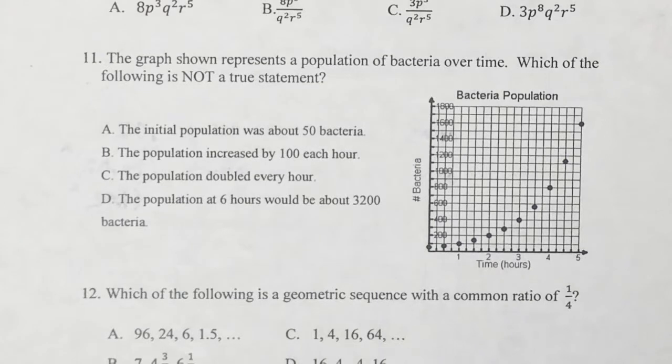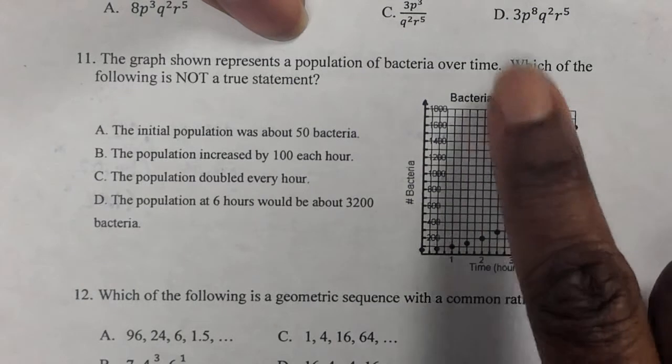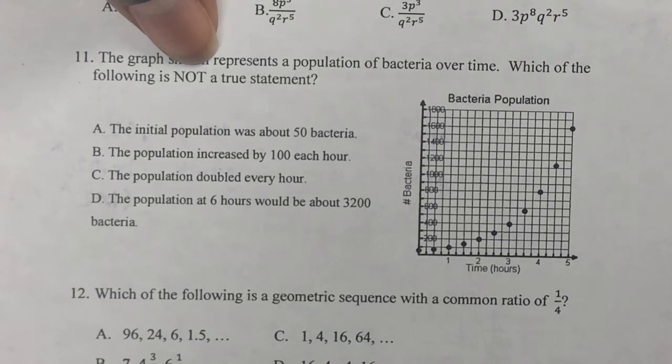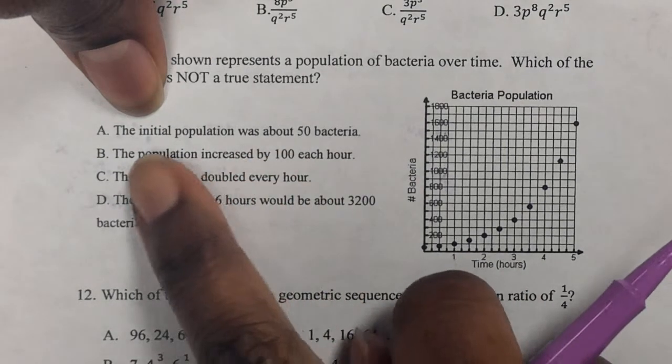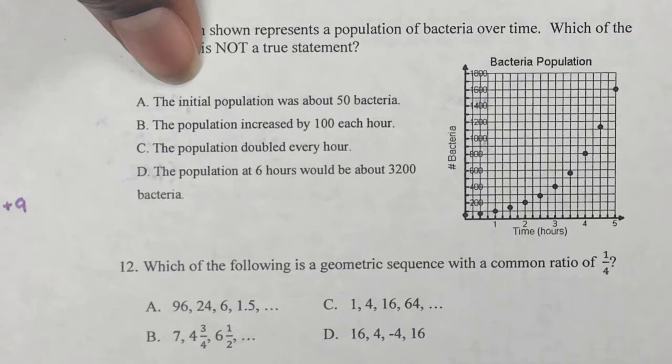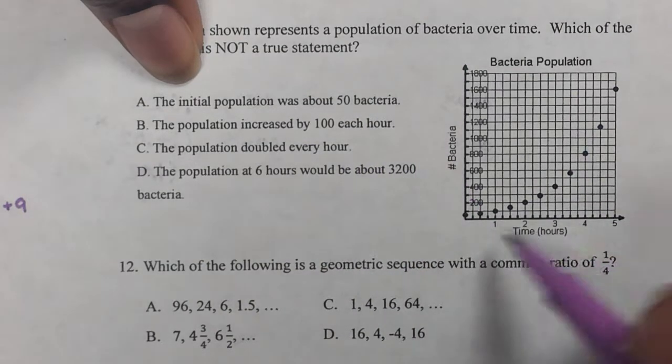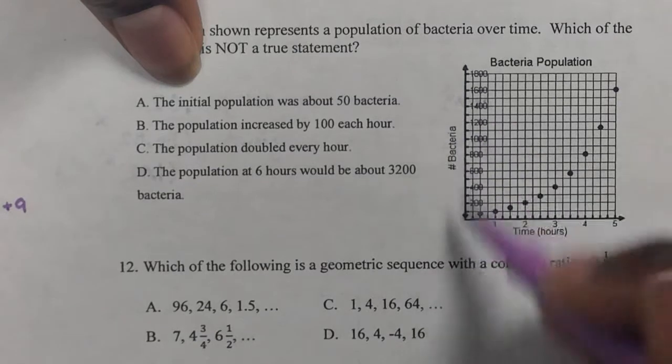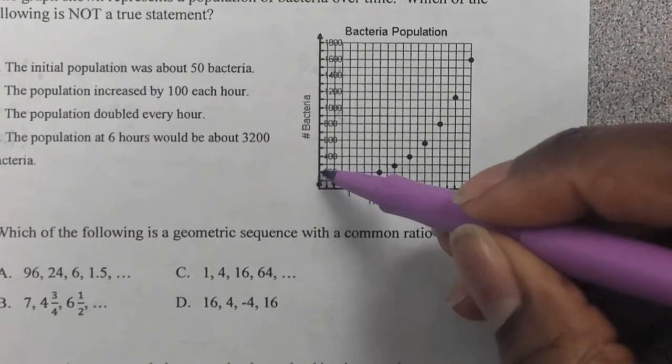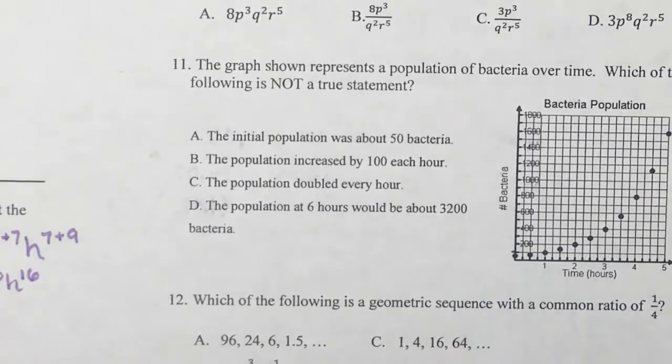This is part two of the test review for exponents. The graph shown represents a population of bacteria over time. Which of the following is not a true statement? The initial population was about 50. If you get really close, remember where the initial population is found? On which axis? The y-axis. So if you look very closely, you will see that if this is 200, this is 100, and halfway through is 50. So that one looks like this is actually true.